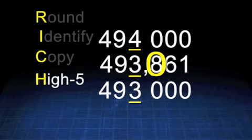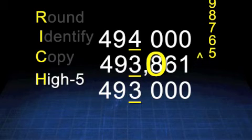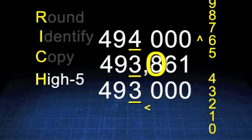The next step is high five. It's the way to determine whether or not to round up. It goes like this: If it's five or more, increase the score. If it's four or less, let it rest.